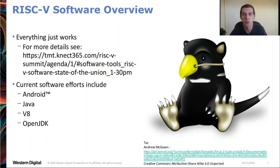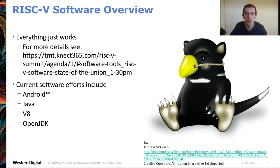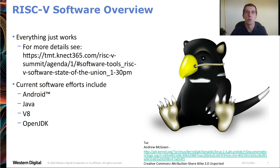There are a few software efforts not yet complete — all were discussed at the RISC-V Summit: Android, Java, V8, and OpenJDK. If you want full details, watch those videos. Normally these projects have a RISC-V support bug tracking issue created, which is always the best place to look because it's up to date and maintained by the projects themselves.